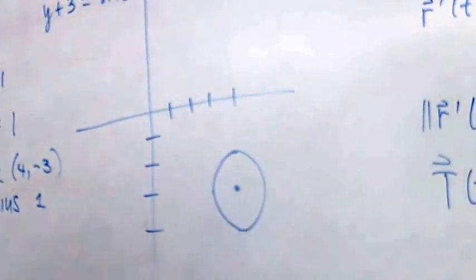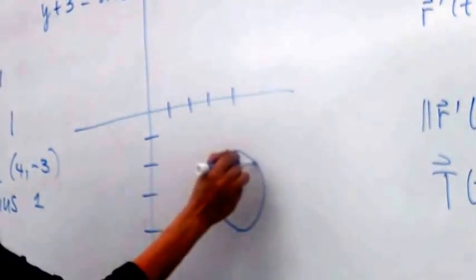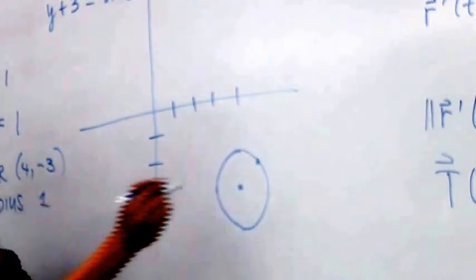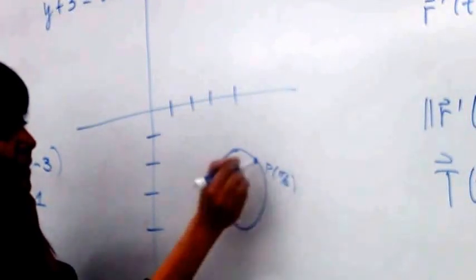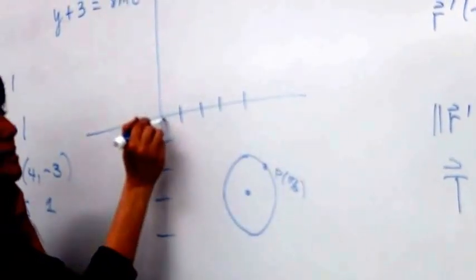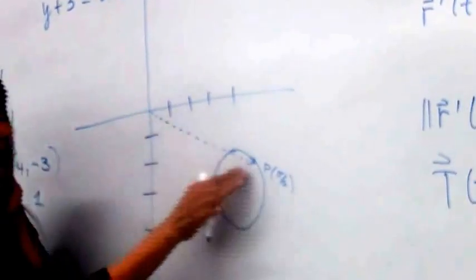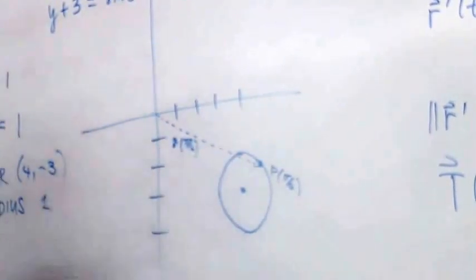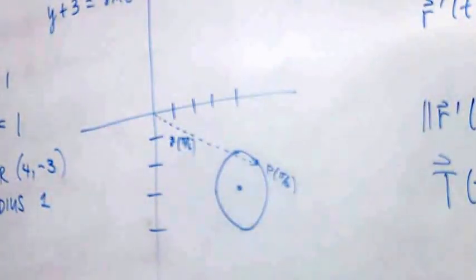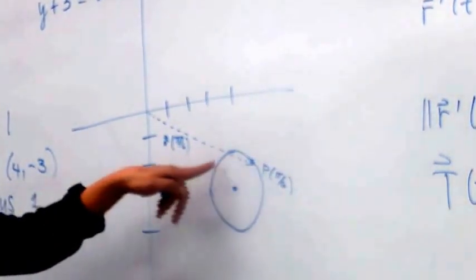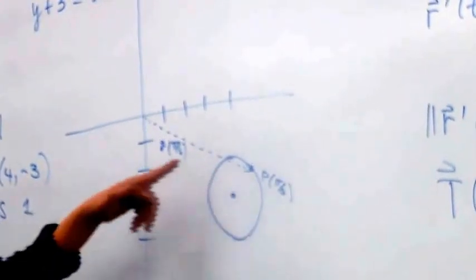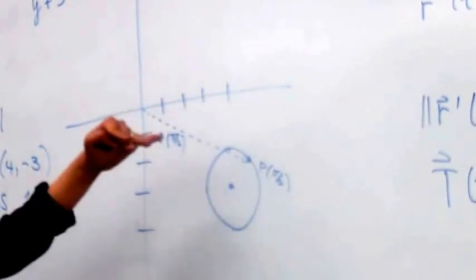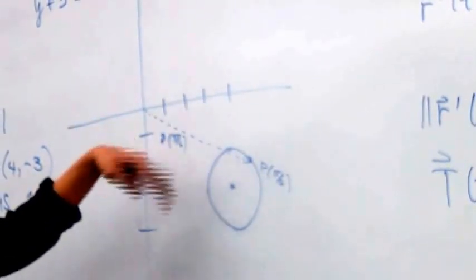The point is at approximately (4.8, −2.5). Now I need to graph T of pi over 6 starting from there. I count 1/2 to the left and about 0.8 up — since T of pi over 6 is (−1/2, √3/2), approximately 0.8 up. So the tangent vector points half to the left and about 0.8 up from that point.